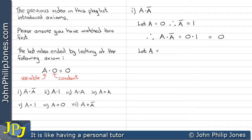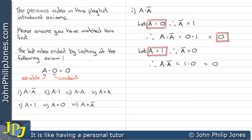Now let A equal one, therefore NOT A will be the opposite, which is zero. Consequently, A AND NOT A will be one AND zero, which still gives zero. When A was zero we got zero at the output, and when A was one we got zero at the output. Therefore we can conclude that A AND NOT A will always give us a zero, and this is an example of an axiom.